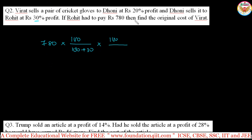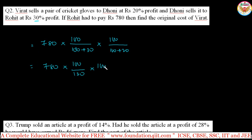Divide by 100 by (100 plus the preceding profit of 20 percent), so 100 plus 20. You can calculate the original cost price simply: 780 into 100 by 130, times 100 by 120. That calculation gives you the original price. You can cancel the zeros.